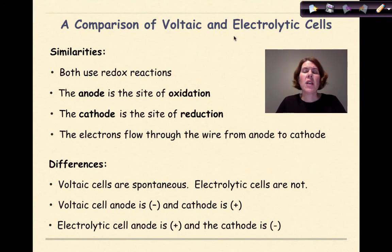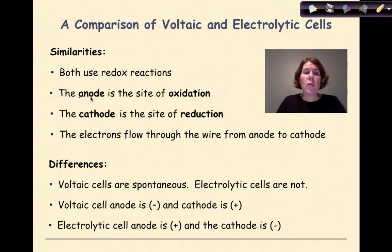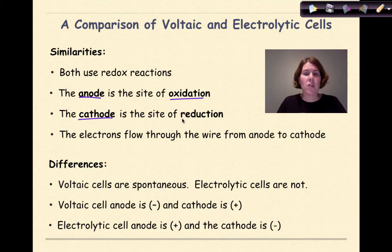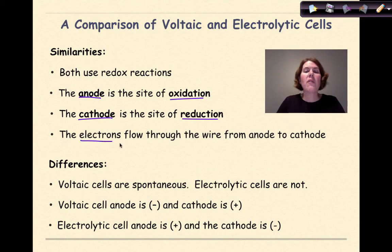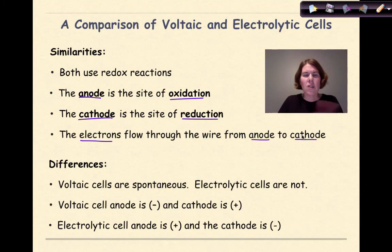A comparison of voltaic and electrolytic cells. Here are the similarities between these two types of electrochemical cells: both use redox reactions. The anode, whether voltaic or electrolytic, will always be the site of oxidation. The cathode will always be the site of reduction — so those stay constant. You can use 'AN OX, RED CAT' with no worries. And electrons will still flow through the wire from the anode to the cathode, so you can follow your alphabet: A, B, C — anode to cathode.